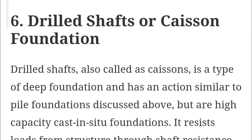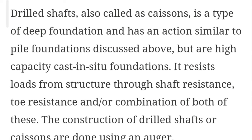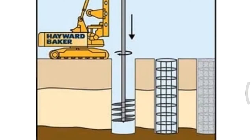The next type is drilled shaft or caisson foundation. Drilled shafts, also called caissons, are a type of deep foundation with action similar to pile foundation but are high-capacity, cast-in-situ foundations. They resist loads from the structure through shaft resistance, toe resistance, and a combination of both. Construction is done using an auger — first drilling into the earth surface and removing the soil from the pit, then placing a reinforcement cage and concreting. That is called caisson foundation.